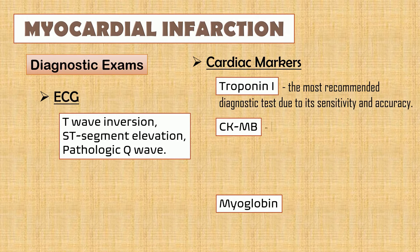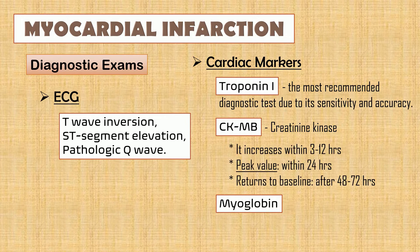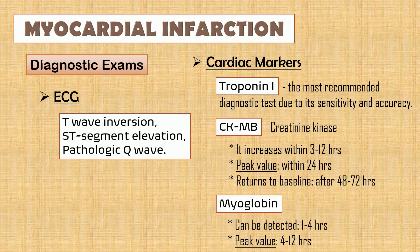Next is CKMB, which is a creatinine kinase found in the myocardial muscle. Time is vital because its level increases within 3 to 12 hours on the onset of chest pain, reaches its peak value within 24 hours, and it will return to baseline after 48 to 72 hours. Finally, myoglobin — it can be detected in the blood 1 to 4 hours after myocardial injury or chest pain.